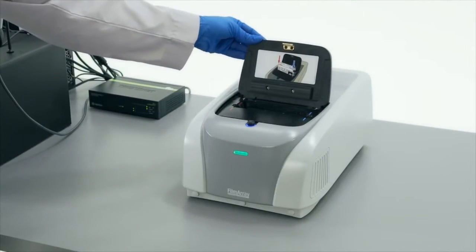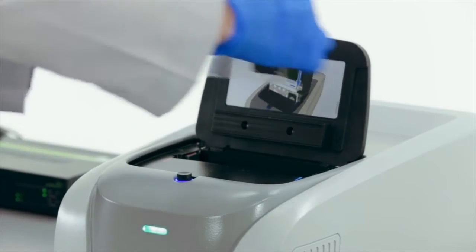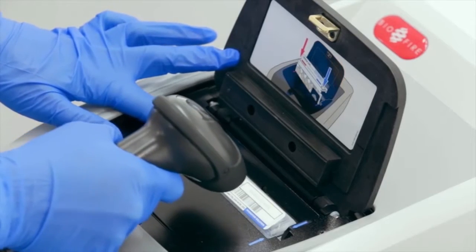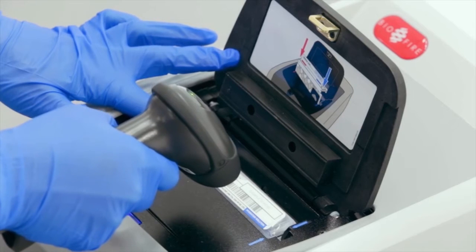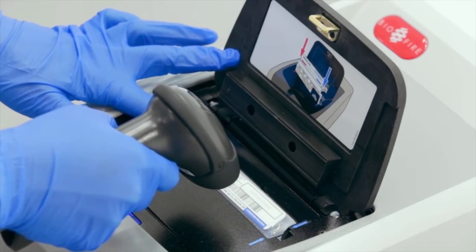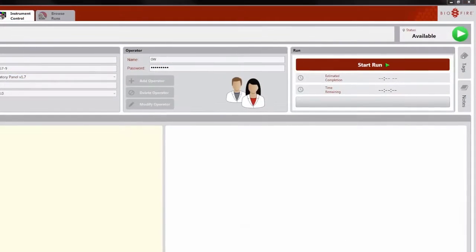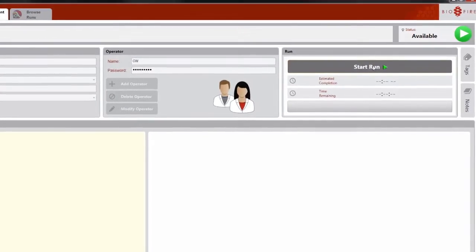The FilmArray instrument is now ready to set up. The FilmArray pouch is loaded into the FilmArray instrument and a barcode reader is used to enter the pouch ID. The sample ID can also be scanned with the barcode reader or entered manually. Last, the user ID and password are entered and then the run is started.